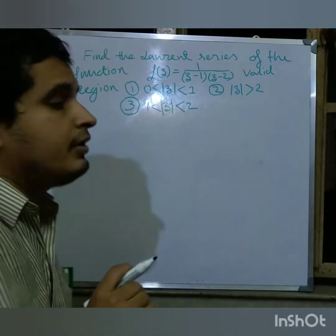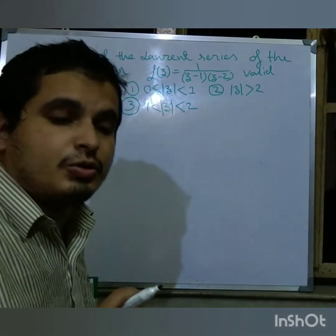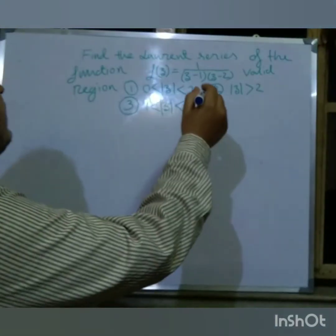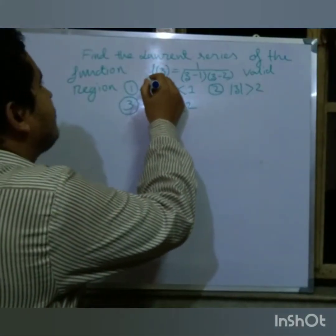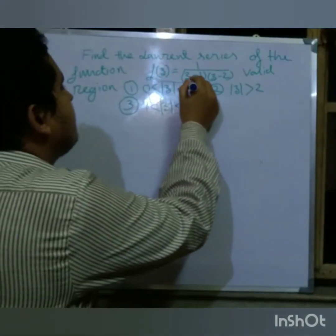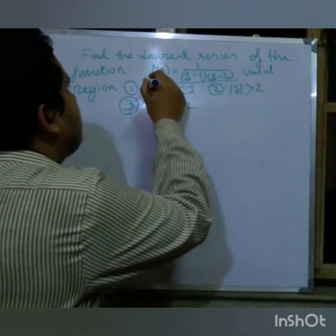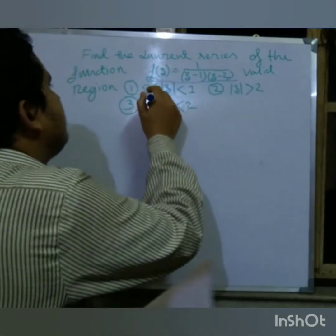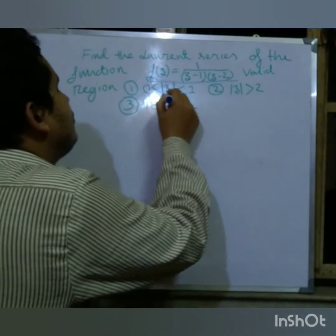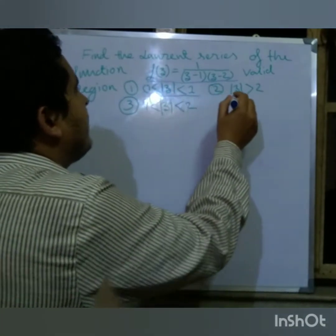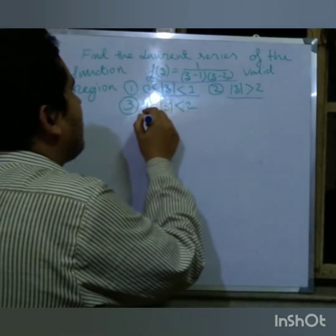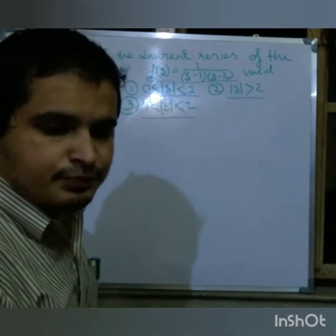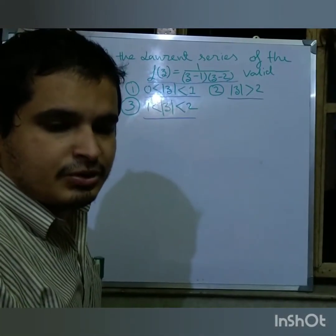Welcome to my channel. I am Prabhul Chakrabhunti. Today I want to discuss Laurent series. Find the Laurent series of the function f(z) equals 1 divided by (z minus 1)(z minus 2), for the regions: |z| < 1, |z| > 2, and 1 < |z| < 2.